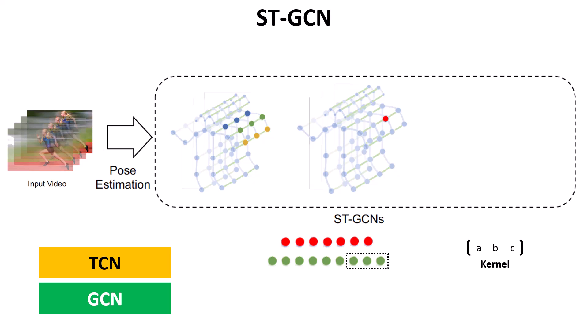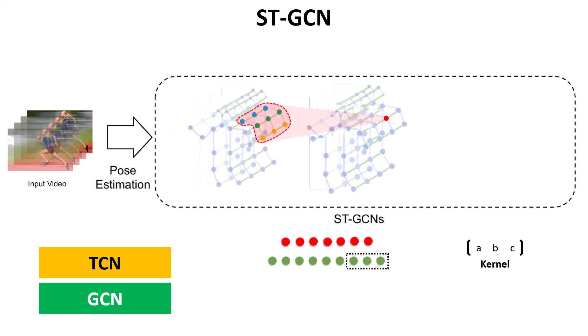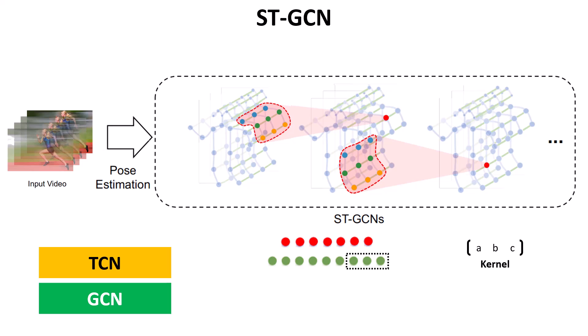Looking at the sequence in the first layer again: we pass information from shoulder and wrist to the elbow via GCN, and we also pass information from the elbow in the previous and next frames to the center elbow via TCN. So the node in the middle layer has a receptive field covering all nine joints — it contains information from all of these joints in their spatiotemporal location. Going deeper into the network, a node like the knee becomes aware of knees, hips, and ankles across multiple frames, capturing more of the spatiotemporal neighborhood.